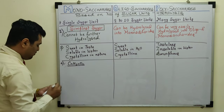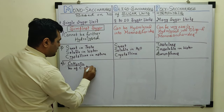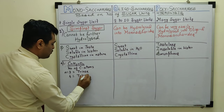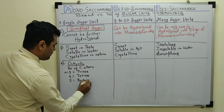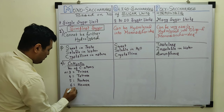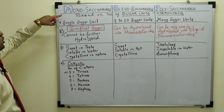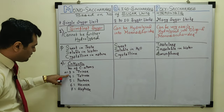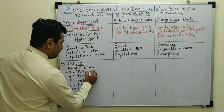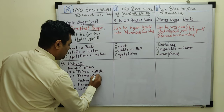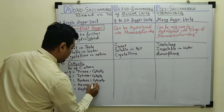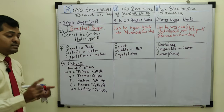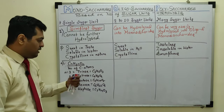Monosaccharides are further classified based on number of carbon atoms using the general formula CnH2nOn. If n=3, they are triose sugars (C3H6O3); n=4, tetrose (C4H8O4); n=5, pentose (C5H10O5); n=6, hexose (C6H12O6); n=7, heptose (C7H14O7). The minimum value of n is 3 (to satisfy the polyhydroxy + aldehyde/ketone definition) and maximum is 7.